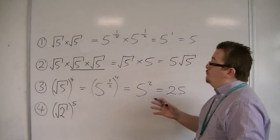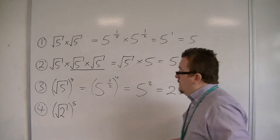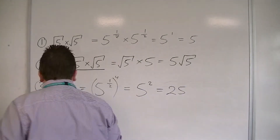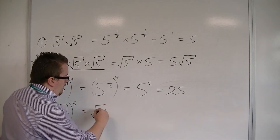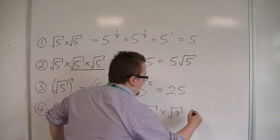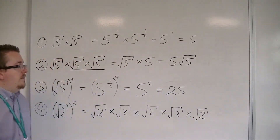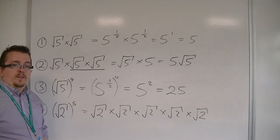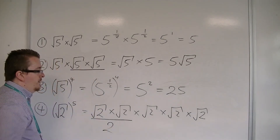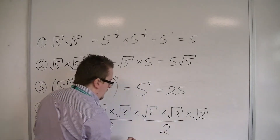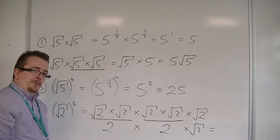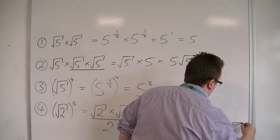For the last one, we've got root 2 to the power of 5. You might want to do this in a similar way using indices, or you might want to think of it as root 2 times root 2 times root 2 times root 2 times root 2. Root 2 times root 2 is just 2, and root 2 times root 2 there is just 2. So we've got 2 times 2 times root 2 — 2 times 2 is 4 — so we have 4 root 2.